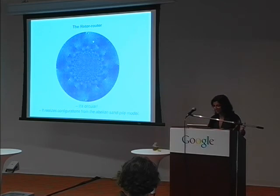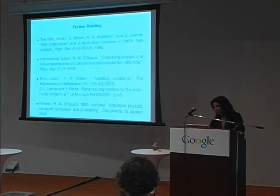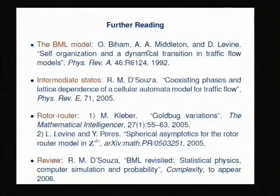I'll close with some pointers to further reading. The BML model was introduced in 1992 by Biham, Middleton, and Levine. The paper on the existence of these intermediate states appeared in PhysRevE in 2005. The Roto-Rooter was introduced by Jim Propp but never written up; there's a great Mathematical Intelligencer article by Kleber introducing the Roto-Rooter to the general public with great pictures. Lionel Levine and Yuval Peres were recently able to prove some properties about the rotor being spherical. And here's a pointer to the review paper highlighting these models and their interplay, appearing in Complexity in a couple of weeks. Thank you.